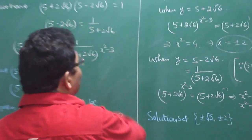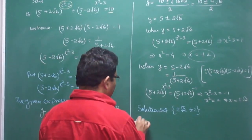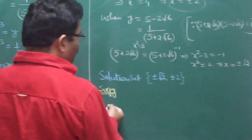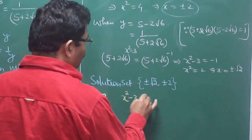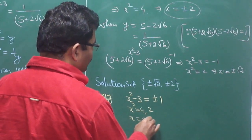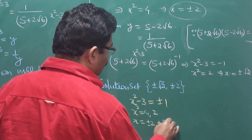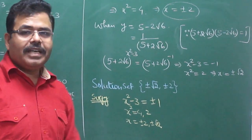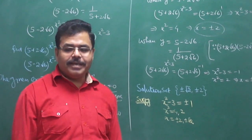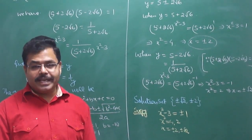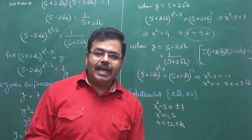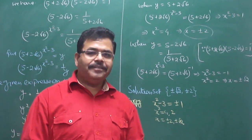So instead of this long solution, the suggestion is: whenever you see such a question, put the power equal to ±1. You get x² = 4 and x² = 2, giving x = ±√2 and ±2. This way four solutions come in at most 3 to 5 seconds — whereas solving fully takes 3 to 5 minutes. I hope this is very helpful. Keep watching our videos for more such tricks. Thank you very much.